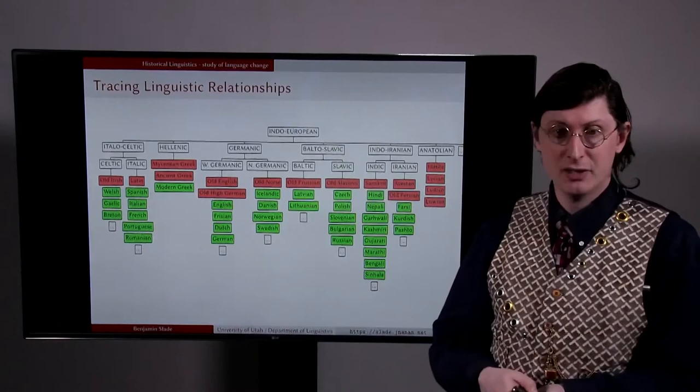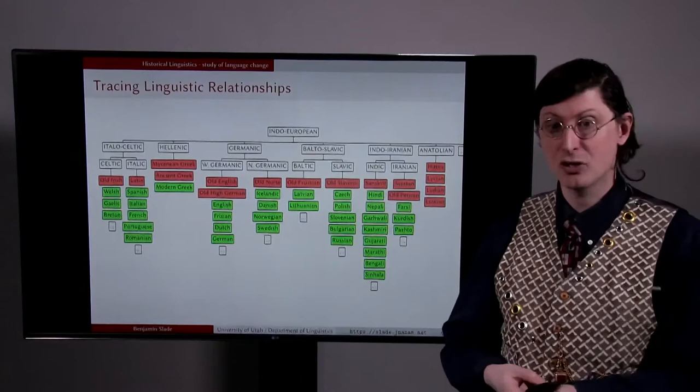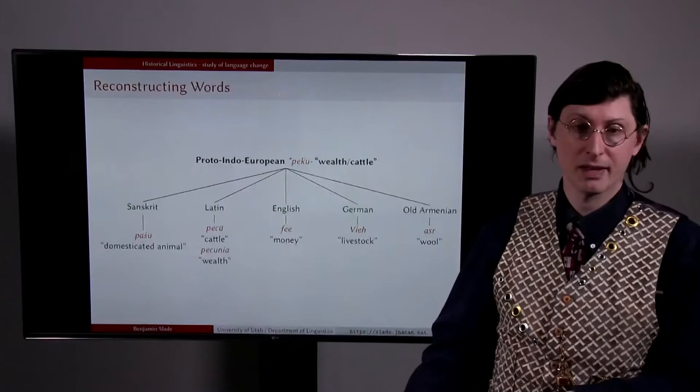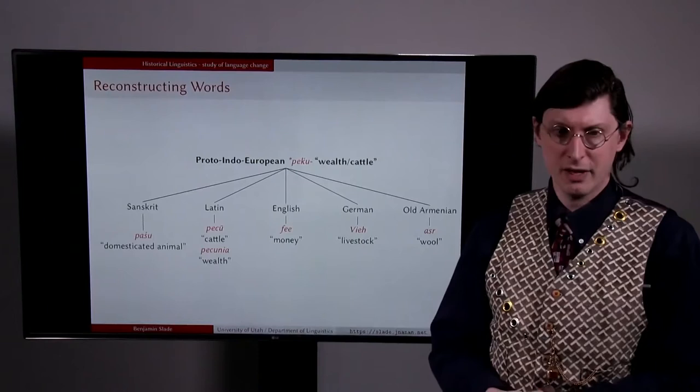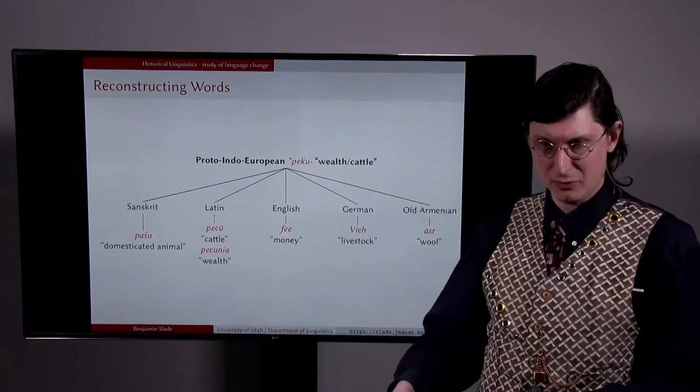But Latin itself is more distantly related to other languages, including ultimately English and German, as well as languages like Czech and Polish, and Nepali and Gujarati and Farsi and Hittite and many others. We can use similar techniques to reconstruct words in unattested languages. Proto-Indo-European *peku can be reconstructed on the basis of correspondence between words like Sanskrit pashu, Latin pecus, English fee, and so on.